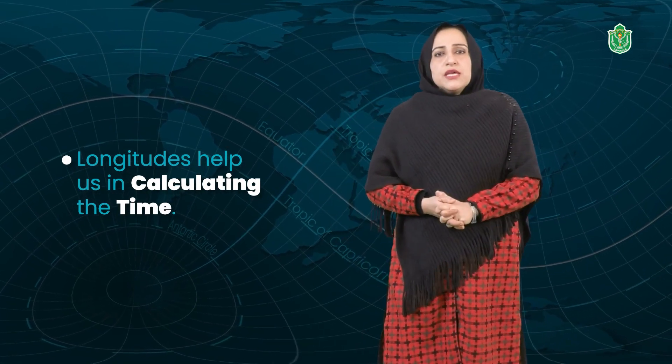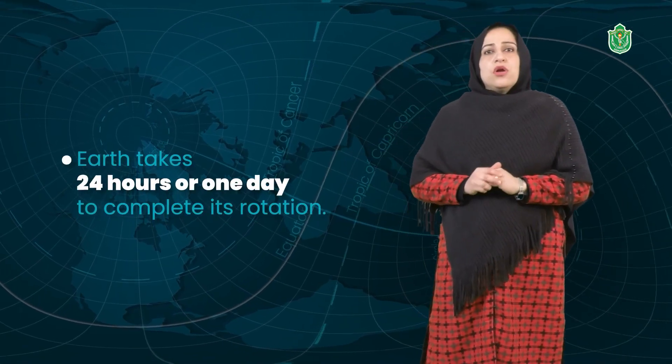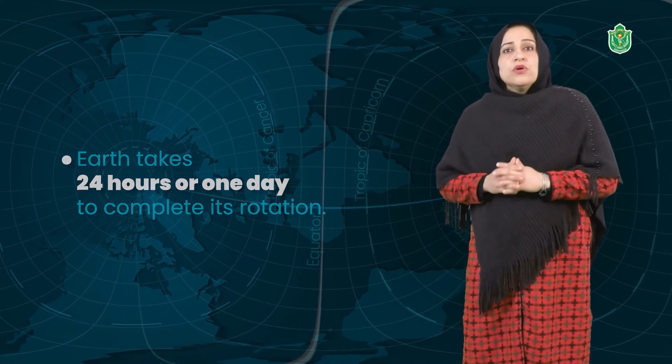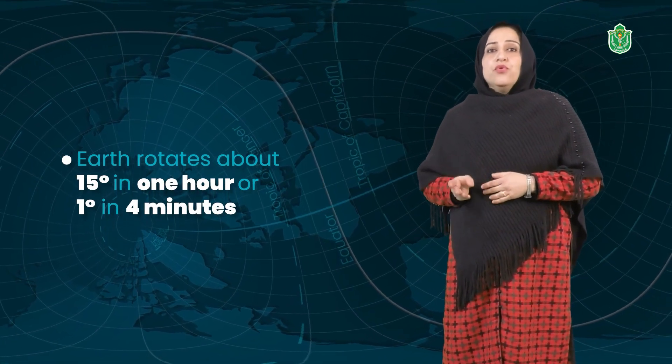In all countries we have different timings. The calculation of timing can be done according to the position of the sun. The earth and the sun keep changing their position because of the rotation of the earth around its axis, and this results in the difference in timings. The earth rotates from west to east — that's why the sun rises in the east and sets in the west. The earth takes 24 hours or one day to complete one full rotation of 360 degrees, so the earth rotates about 15 degrees in one hour or one degree in four minutes.